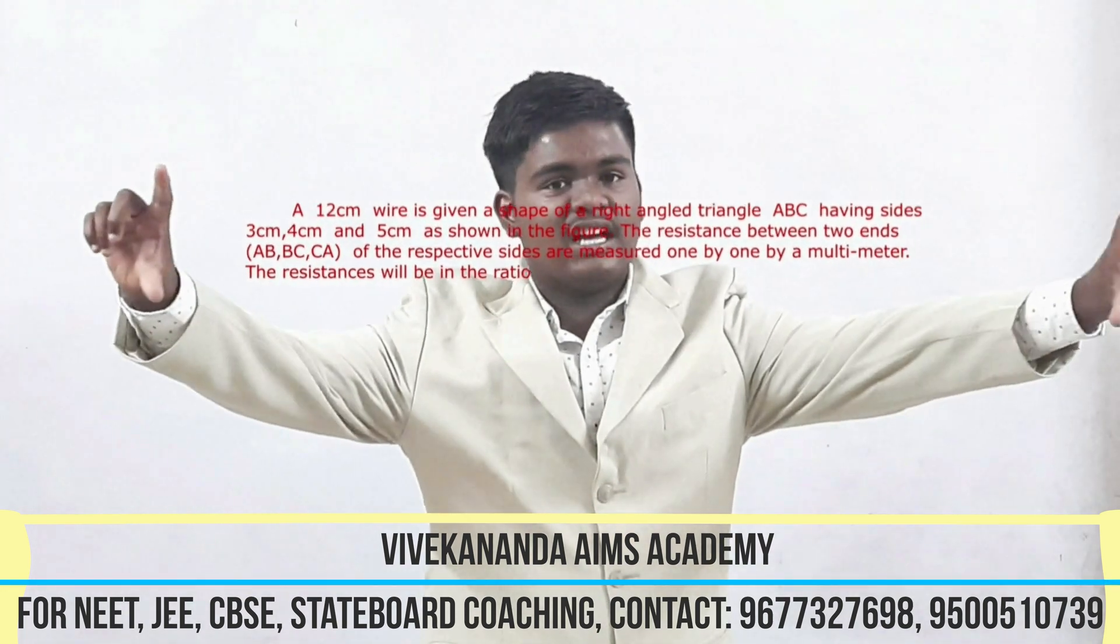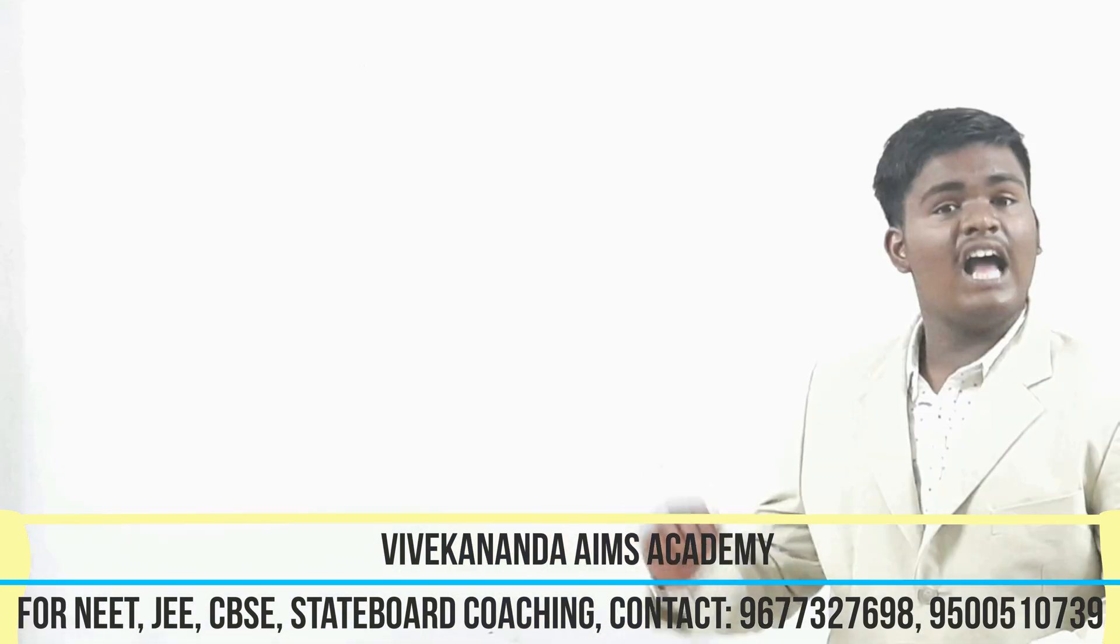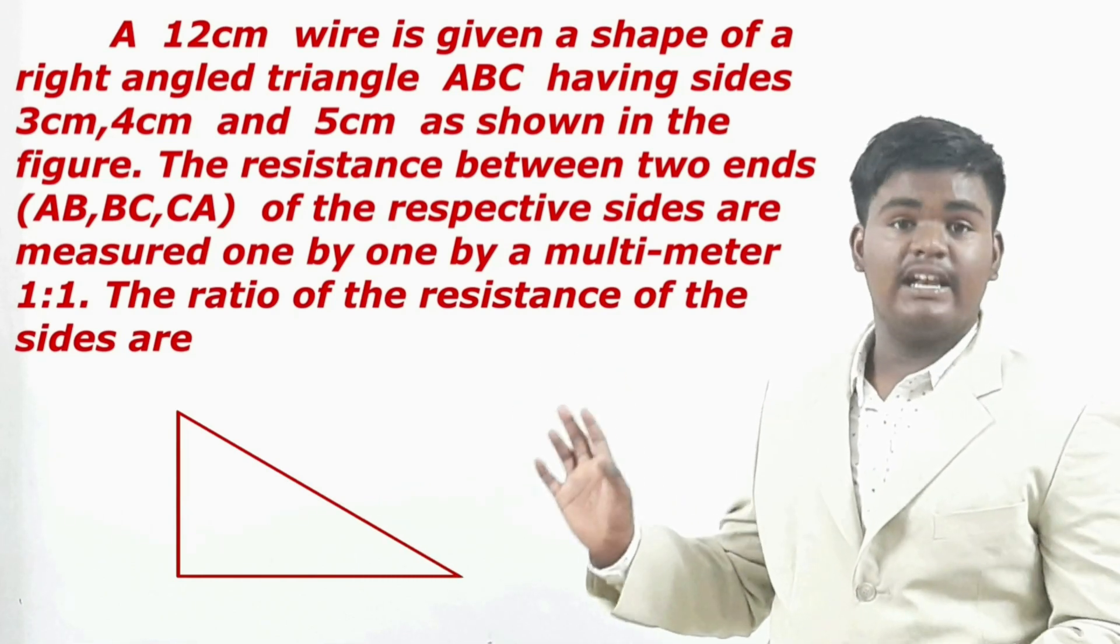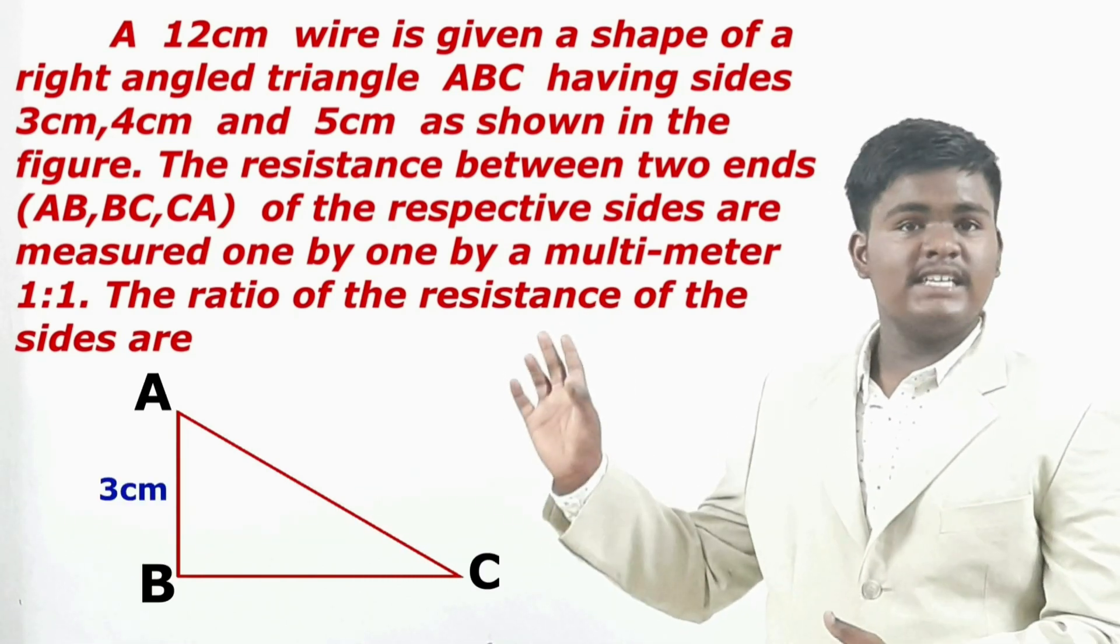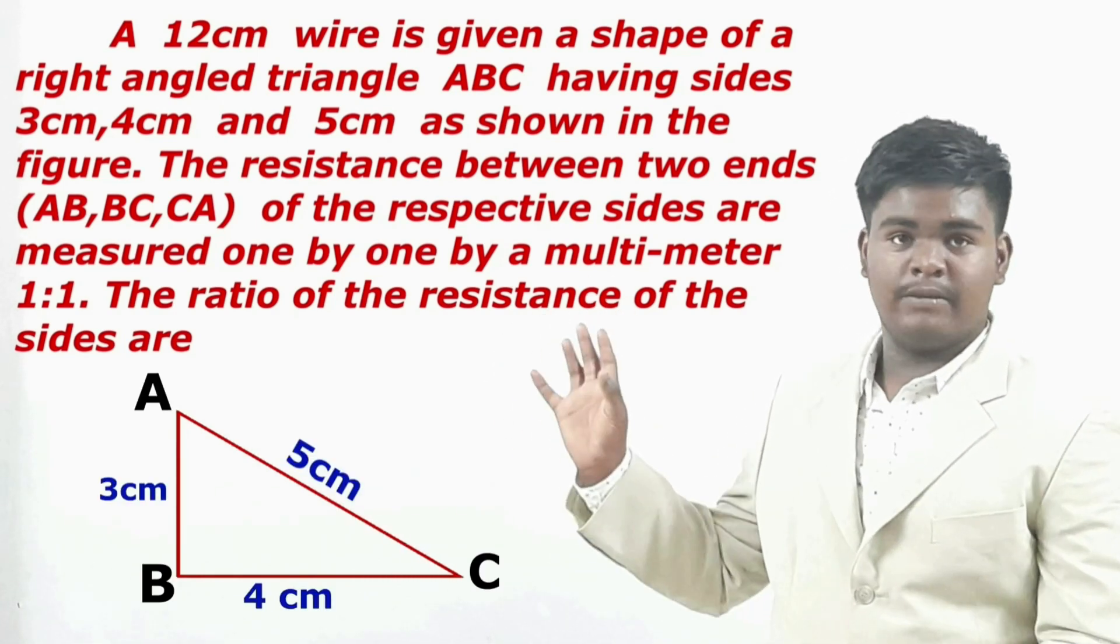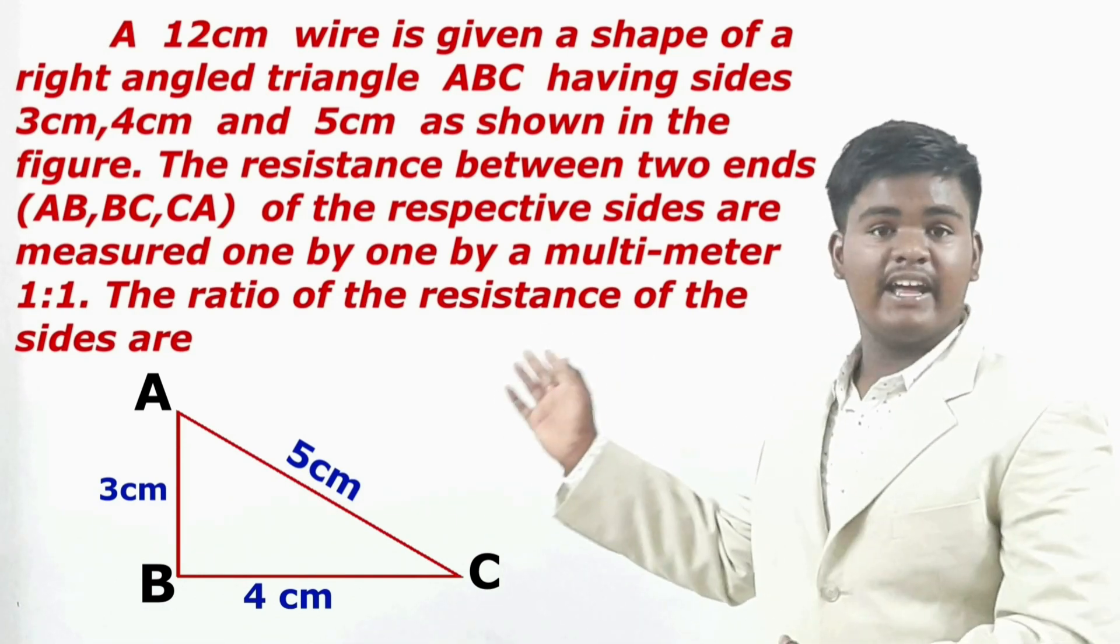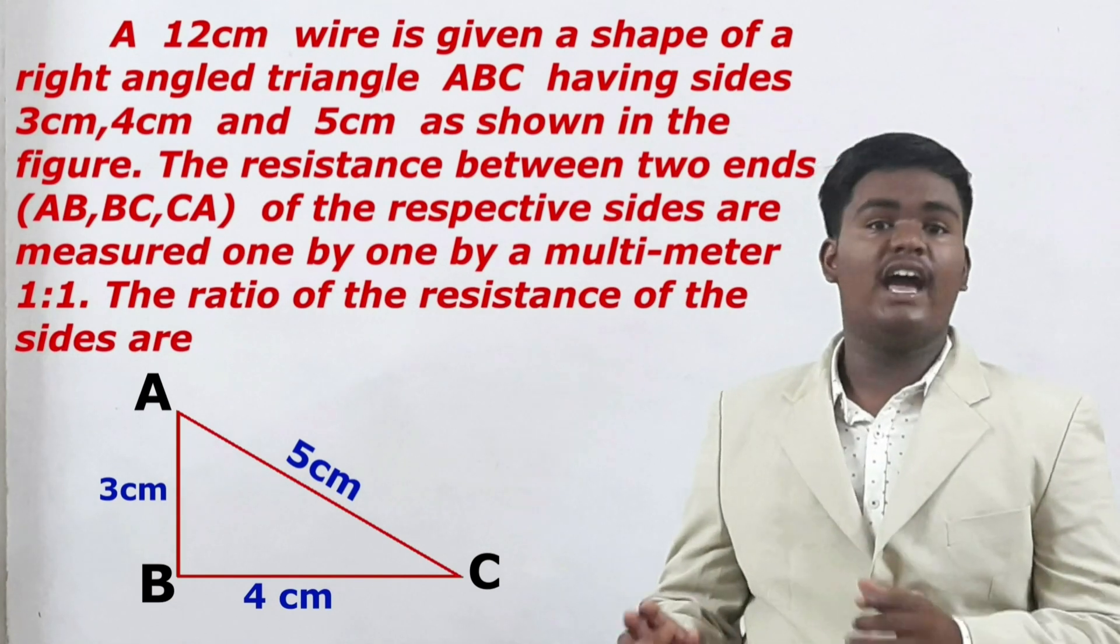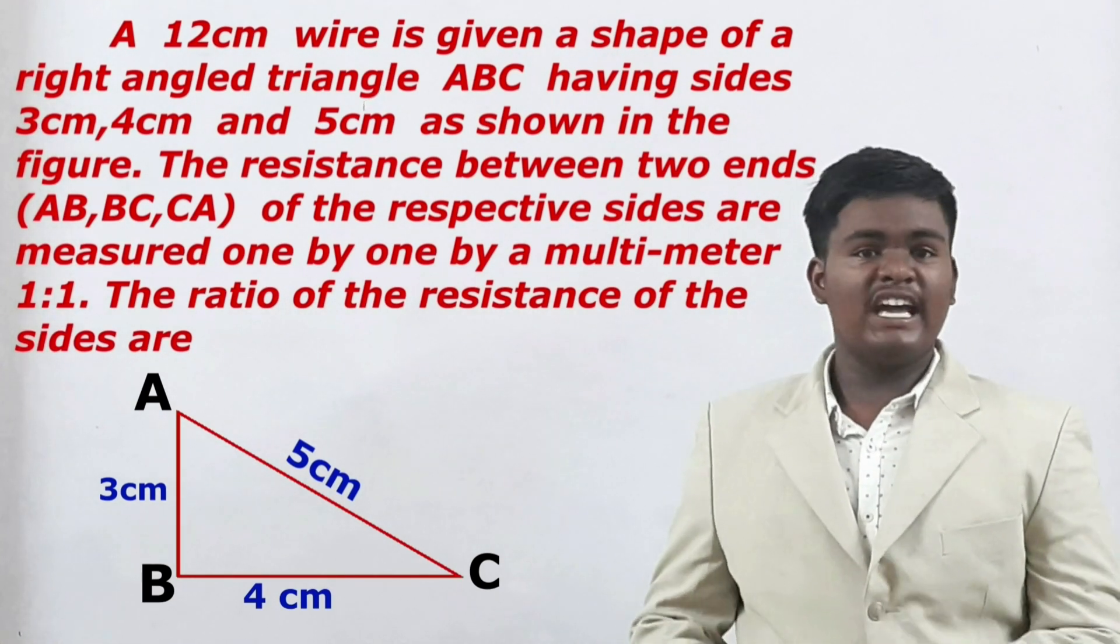We can see a beautiful question here which is asked from Current Electricity. We have a 12cm wire which is in the shape of right-angled triangle having the sides of 3cm, 4cm and 5cm which is shown in the figure here. The resistance between the two ends AB, BC and CA are measured by a multimeter. The ratio of the resistances of the sides are.